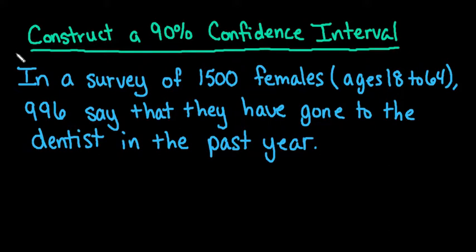The situation we have here is in a survey of 1,500 females ages 18 to 64, 996 say that they have gone to the dentist in the past year. For this one, we have to first figure out what type of confidence interval we want to generate. Because we are given a part of a sample, that is our p-hat, and so that needs to trigger that you're going to use the one-proportion z-interval.